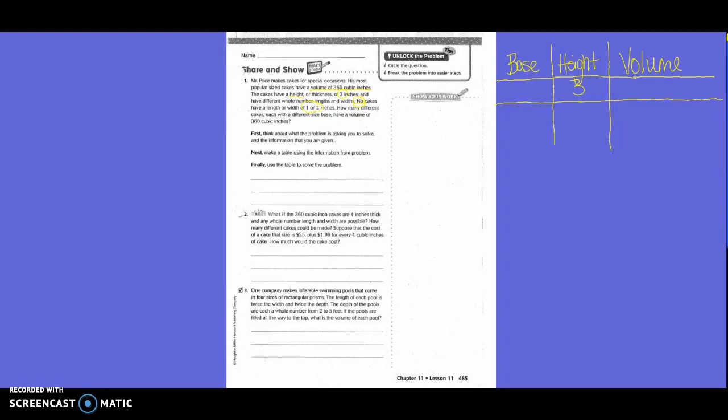The height is 3 inches. The volume is 360. And then there will never... No cakes will have 1 or 2 inches in it. So we will never have a 1 or a 2 in there. So if we'll never have a 1 or a 2, we would start with 3. And then we automatically know 3 times 3 is 9. So what would you have to take times 9 to get 360? 40. So then my volume would be 3 times 40 times 3 equals 360.